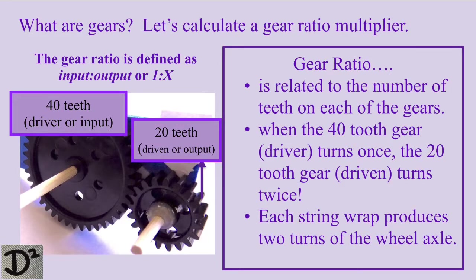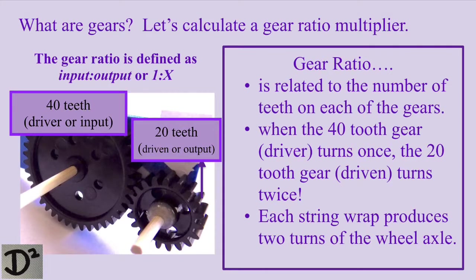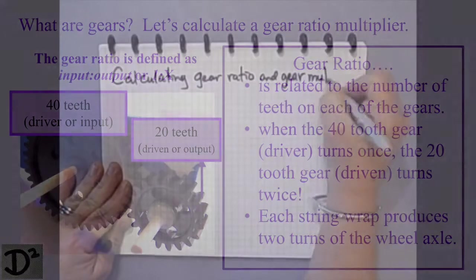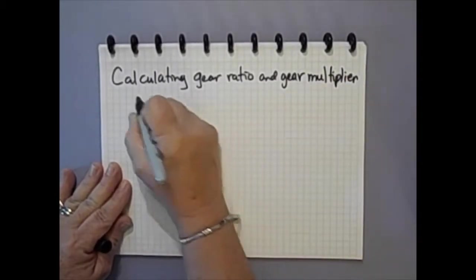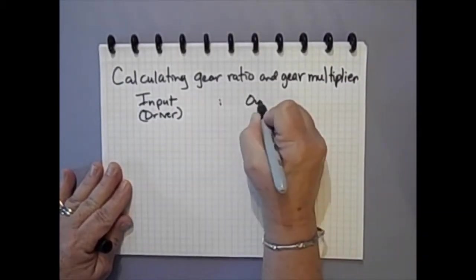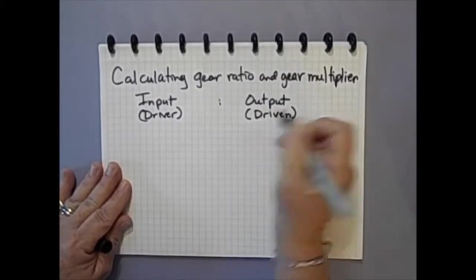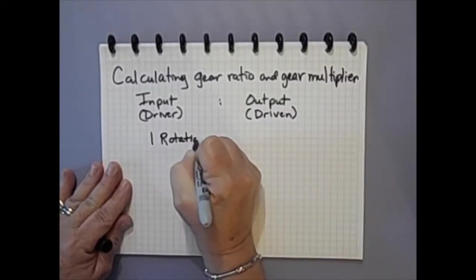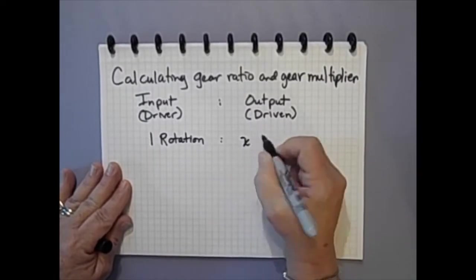In a mousetrap car, the input or driver gear is the gear that is moved by the pulling string, and it will turn one time for each string wrap around the axle. The output, or driven gear, is moved by the rotating driver gear, and as long as it has fewer teeth than the driver gear, it will turn multiple times. We can determine the number of rotations of the driven gear, the output, that occur during one rotation of the driver gear. The number of rotations of the driven gear is used as a multiplier to predict distance.